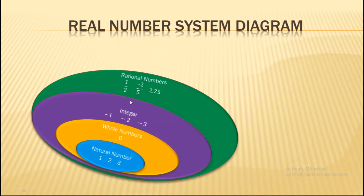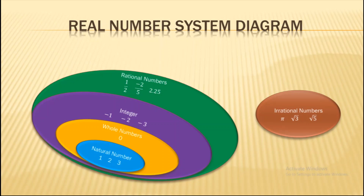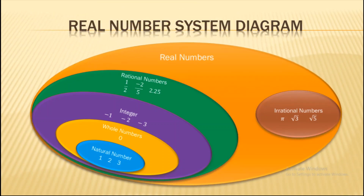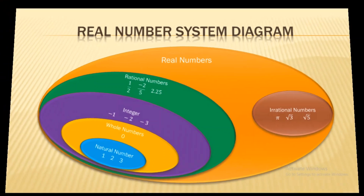The new thing we learn in this class is irrational numbers. The combination of rational and irrational numbers forms the complete set of real numbers. So √3 is a real number but not a rational number, while 1/2 is a rational number and also a real number.